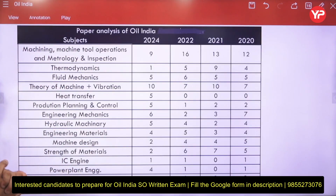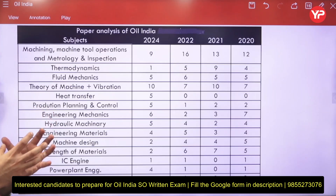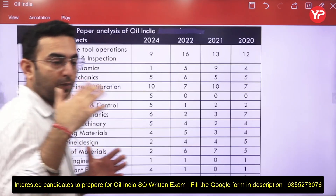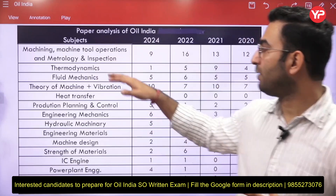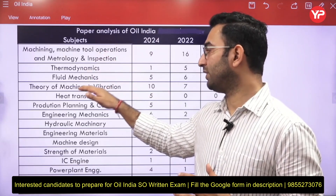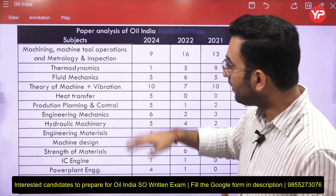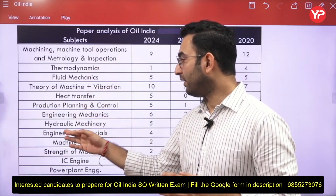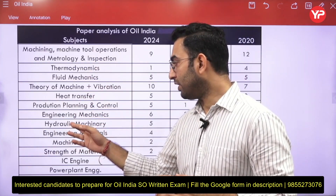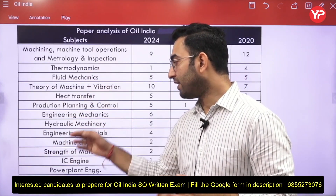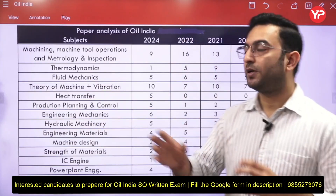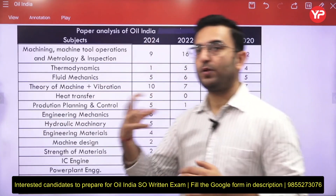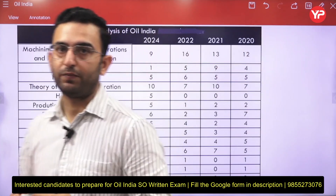When prioritizing subjects for preparation, start with production first, then theory of machines with vibration, then fluid mechanics and hydraulic machines, and then move to engineering mechanics, machine design, and strength of materials. This is the recommended sequence for preparing for this particular recruitment.